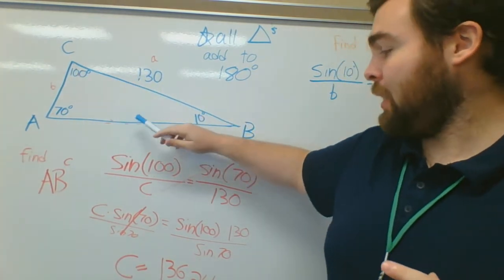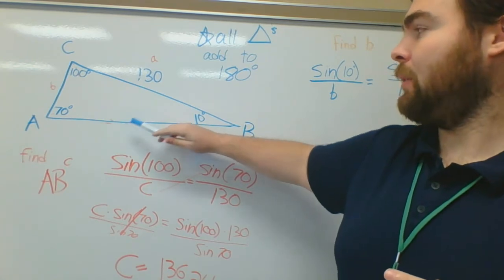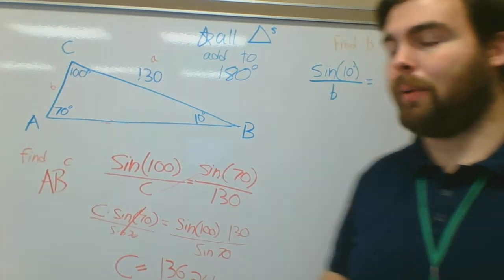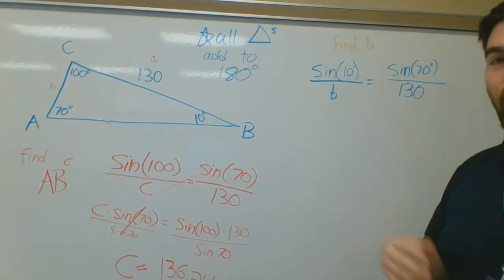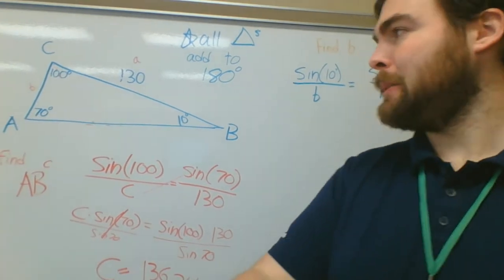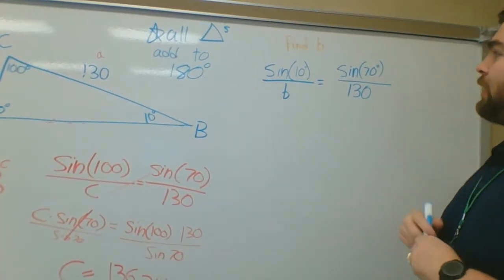Now, just looking ahead, thinking about this, this is 70 degrees. That's a wide angle. This is 130. This is 100 degrees. It's even bigger. This was 136. This is a small degree. This should be a much smaller number. So, kind of keep that in mind. If you don't get a smaller number, you probably did something wrong. Go back and double check your work.